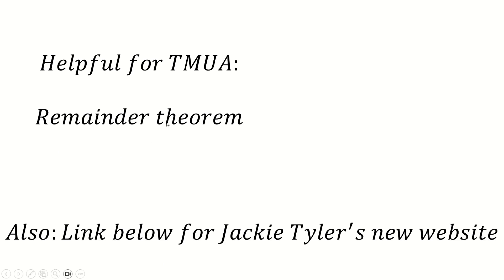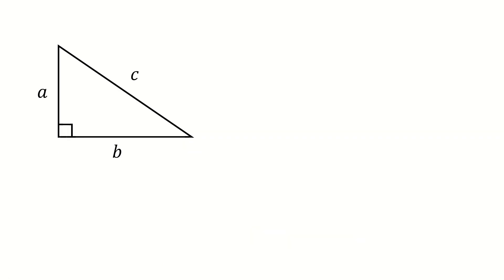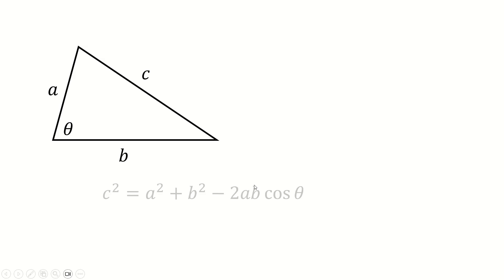Otherwise, let's start remainder theorem. I'm going to start this in a bit of a weird place. Most people like Pythagoras. I don't like Pythagoras. I think it's dumb. The reason I think Pythagoras is dumb is because it's not really a theorem on its own. It's just a very special case of cosine rule.